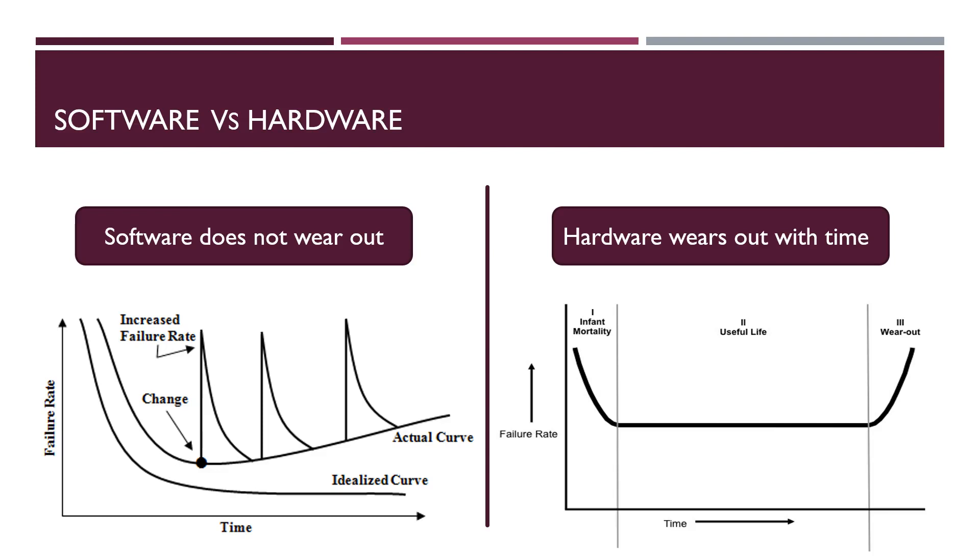In actual software curve, initially, the failure rate is high because of undetected defects. And when we corrected these defects, then steady state is started. As we know, changes are very common in software. When we added these changes, these failure rate will increase due to updation in the code and addition of new defects. When these failures is increased, we corrected all the defects and failure rate comes down. This process continuously goes on and no wear out situation occur in the graph.